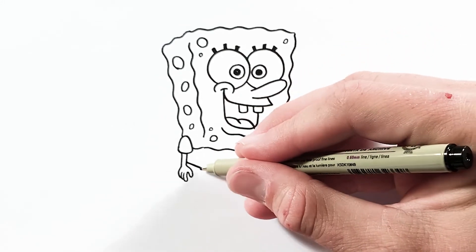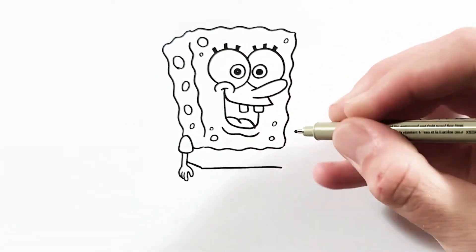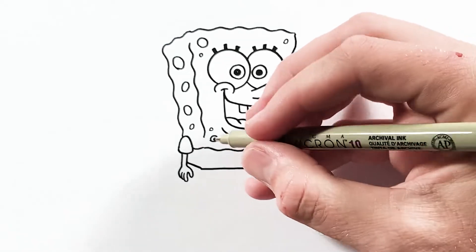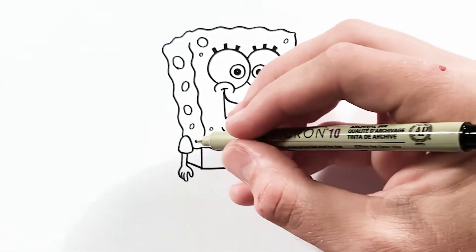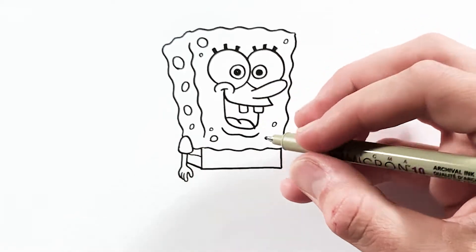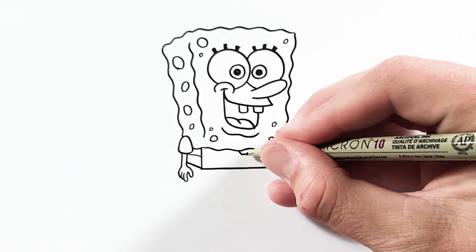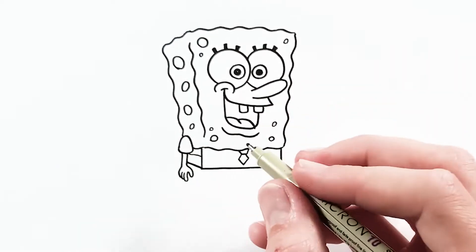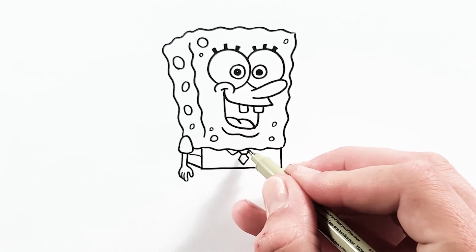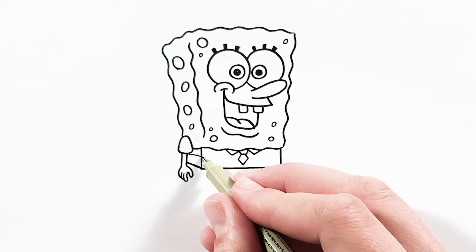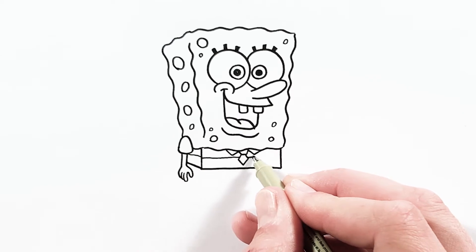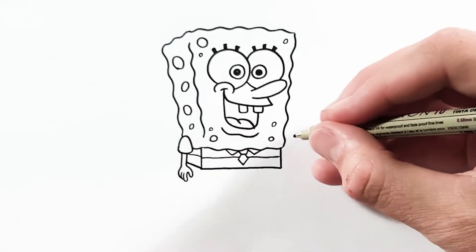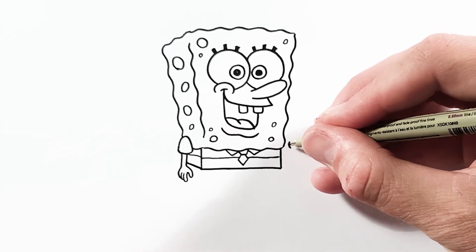I draw SpongeBob's body opposite the way that I draw his head. SpongeBob's head I draw from the inside out. SpongeBob's body I draw the outside before filling in the details. It's always case by case whether you're drawing out to in or in to out, but play around with the concept and you'll get comfortable making that decision yourself.